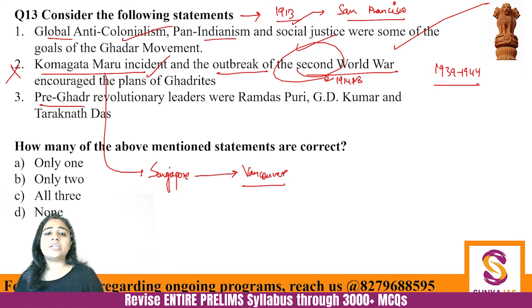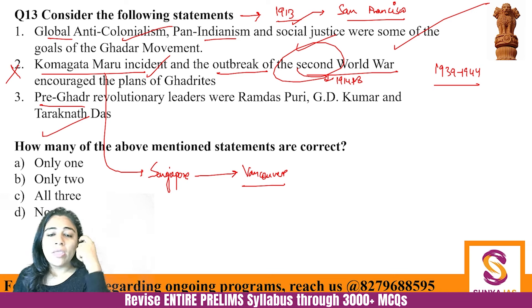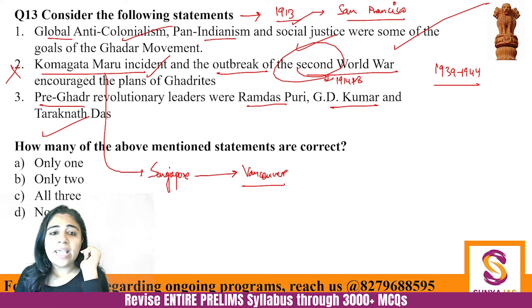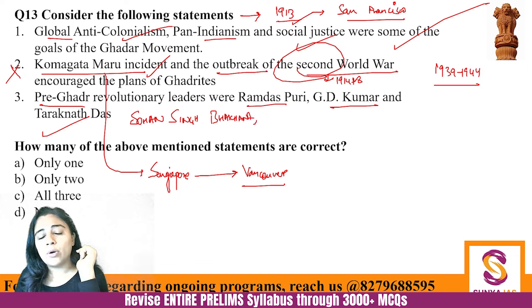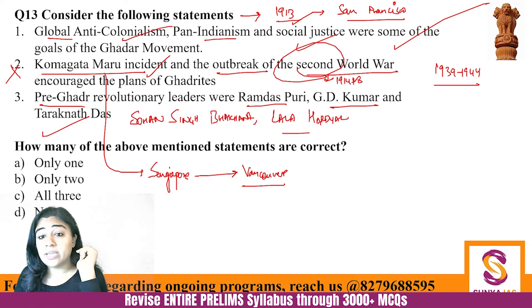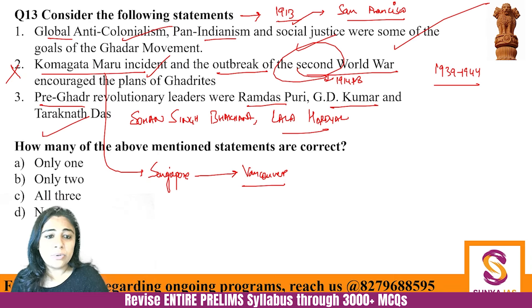Pre-Gadar revolutionary leaders were Ramdas Puri, G.D. Kumar, and Taraknath Das — this is correct. Another important leader was Sohan Singh Bhakna. The most important leader of the Gadar movement was Lala Hardayal — not Ajit Singh, who was not directly part of Gadar. Key leaders of HSRA — Rajbihari Bose and Sachin Sanyal — were also associated with the Gadar movement context. Two of the three statements in this question are correct.